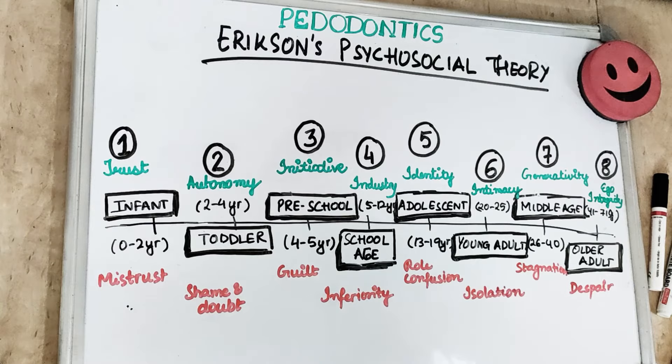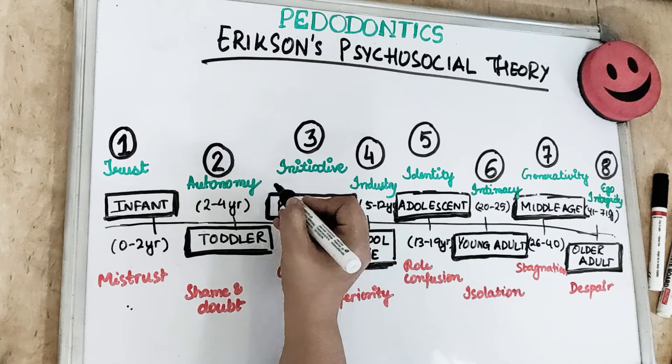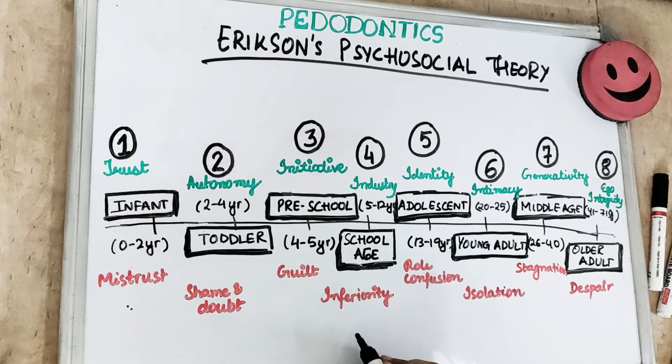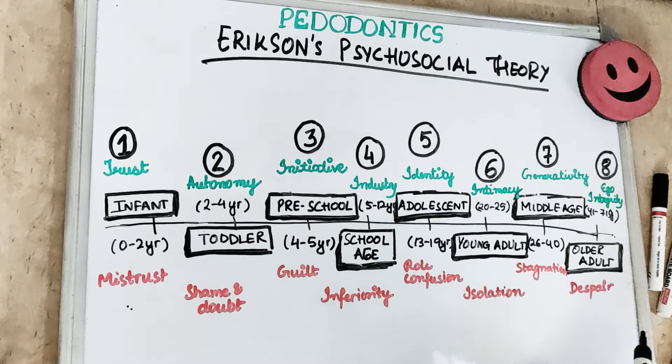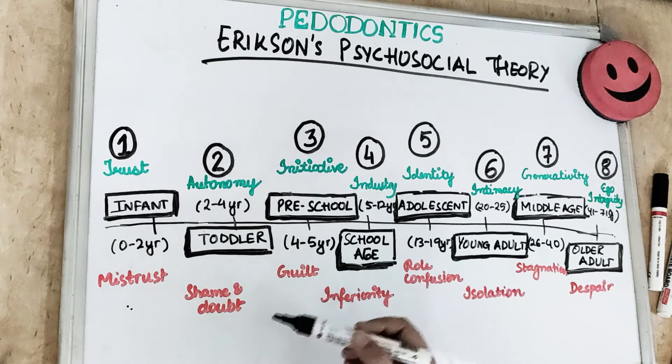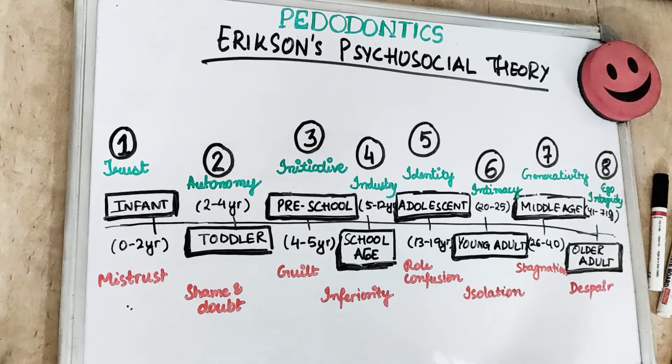Here is a mnemonic to memorize all eight stages in one shot: 'Ek sachchi mistress ki hope — auto mein shame ko initiate hui par guilt, jo industry mein thi wo inferiority le aayi, identity mein aur apne role ko lekar confuse hui, intimacy aur isolation ke baad bhi, generativity aur stagnation ke baad bhi.'